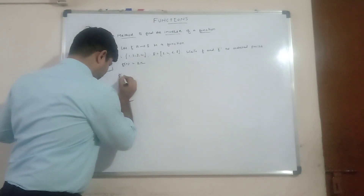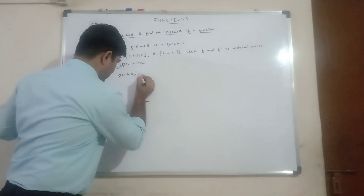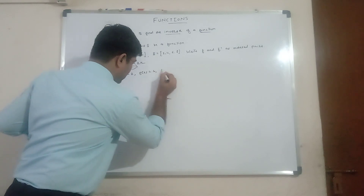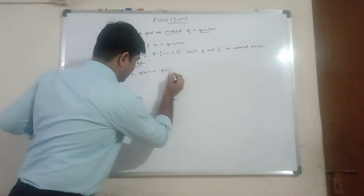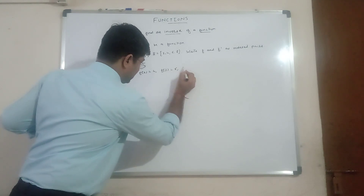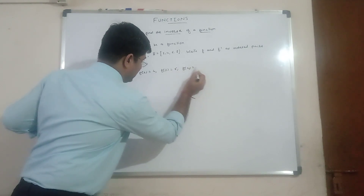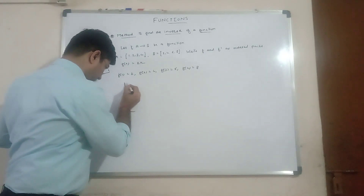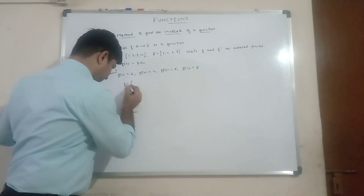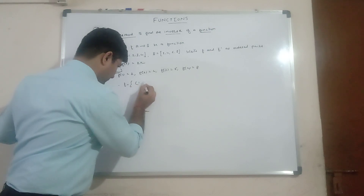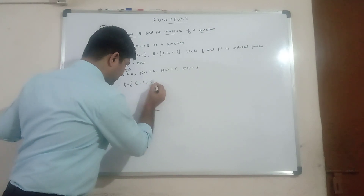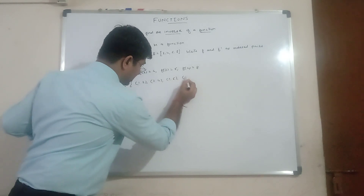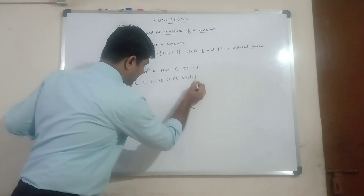Taking values of x from the domain one by one: f(1) = 2, f(2) = 4, f(3) = 6, and f(4) = 8. Therefore, in terms of ordered pairs, function f can be written as {(1,2), (2,4), (3,6), (4,8)}.